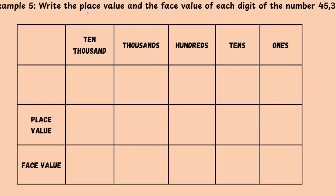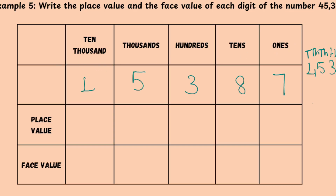Here we have an example: write the place value and face value of each digit of the number 45,387. So first we will write the digits in their respective positions. 7 is in the 1's place, 8 is in the 10's place, 3 is in the 100's place, 5 is in the 1000's place, and 4 is in the 10,000's place.